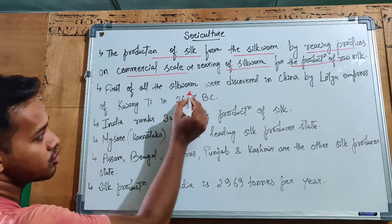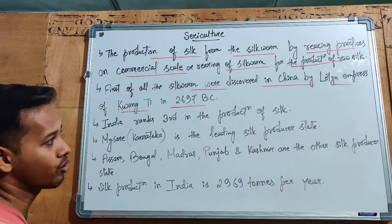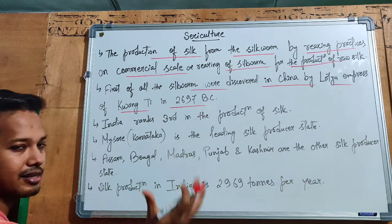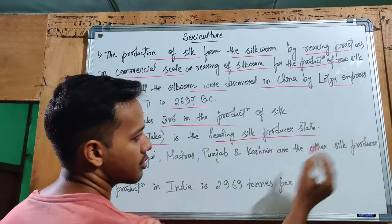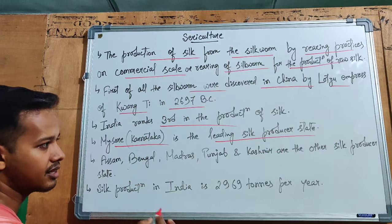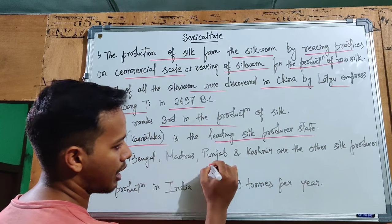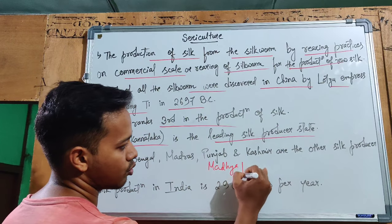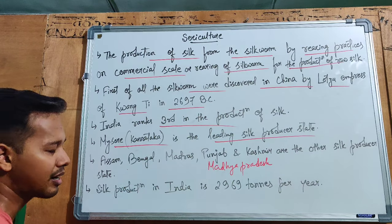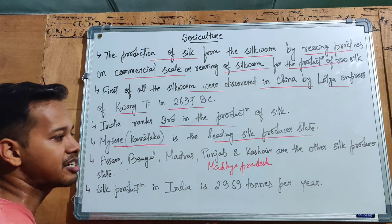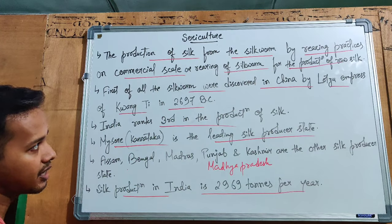First, silkworms were discovered in China by Empress Lei Zu of Emperor Huang Ti in 2697 BC. India ranks third in the production of silk. Mysore, Karnataka is the leading producer state of silk in India. Other silk-producing states include Assam, Bengal, Madras, Punjab, Kashmir, and Madhya Pradesh.